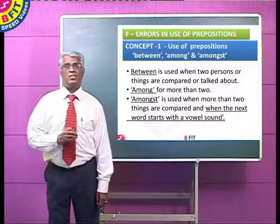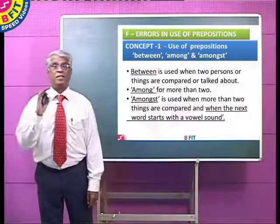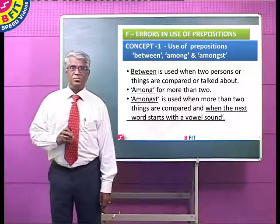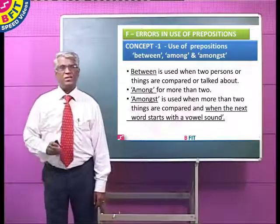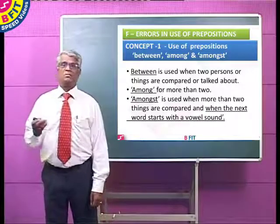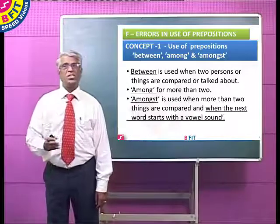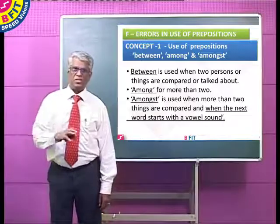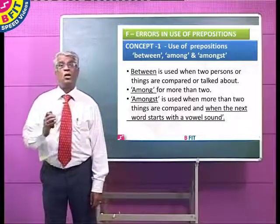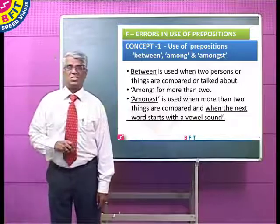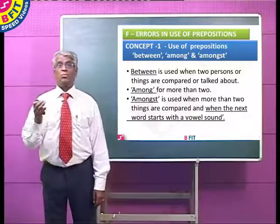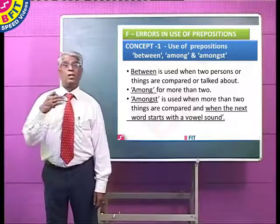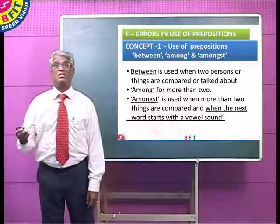The first is the correct use of the three prepositions: between, among, and amongst. 'Between' is used when two things or two persons are mentioned or compared in a sentence. When more than two persons or things are compared or mentioned in the sentence, you should not use 'between' but 'among.'